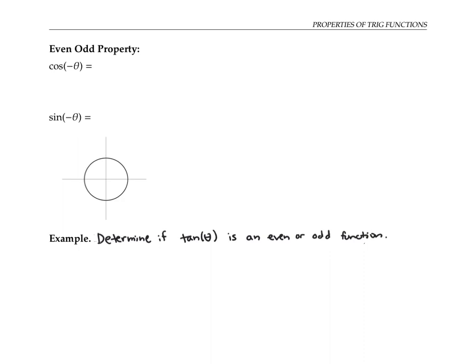The next property I call the even-odd property. It says that cosine is an even function, which means that cosine of negative theta is the same thing as cosine of theta. Sine is an odd function, which means that sine of negative theta is the negative of sine of theta. To see why this is true, let's look at angle theta and angle negative theta — a negative angle means you go clockwise instead of counterclockwise from the positive x-axis.